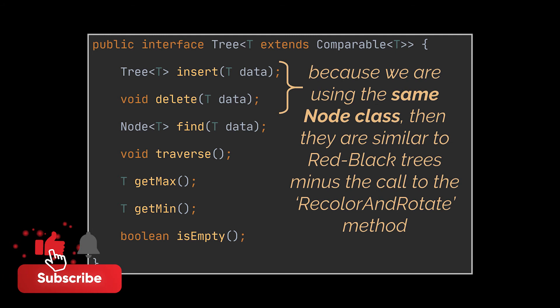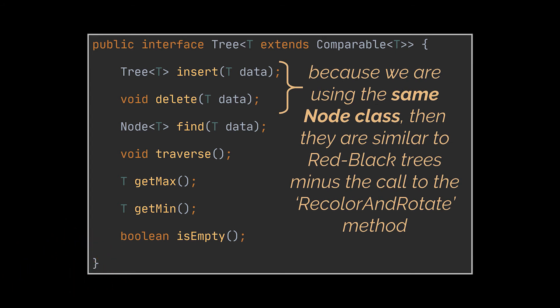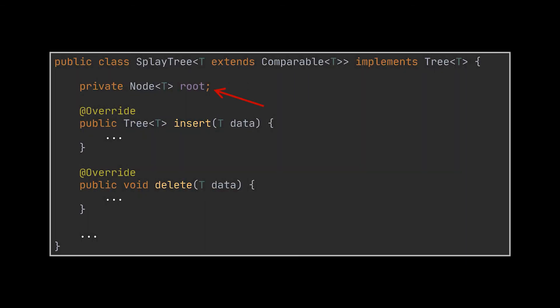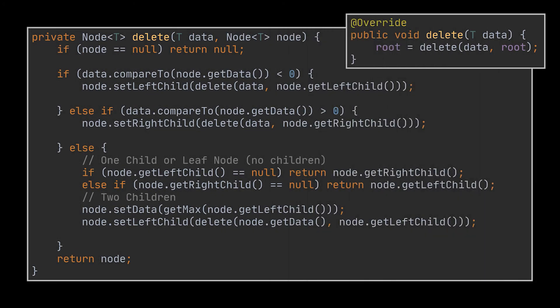Because the node class is very similar to the one we created in the red-black trees video, the implementation of the insert and delete operations is also similar. The only change needed is to remove the call to the recolor and rotate method. In the red-black trees video we only adapted the insert operation to work on nodes having a parent reference, so now we need to adapt the delete operation as well.